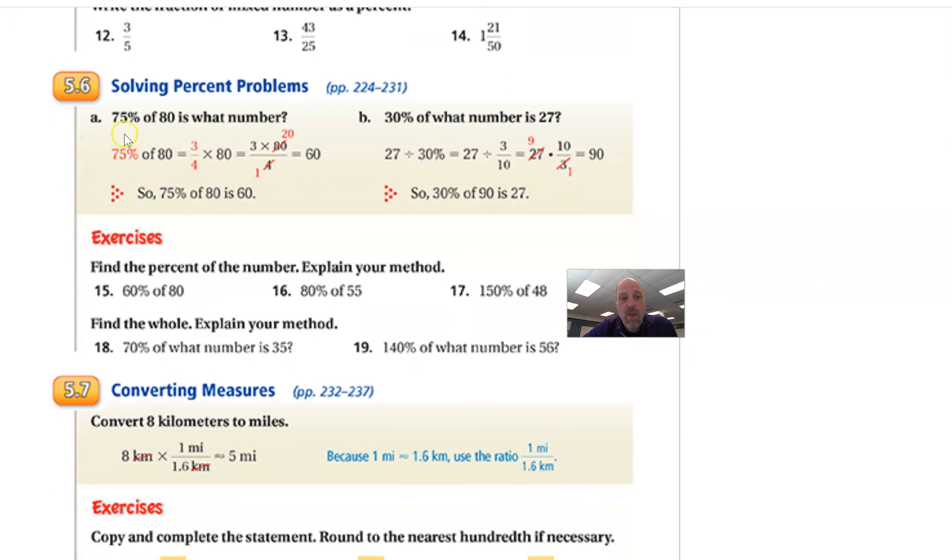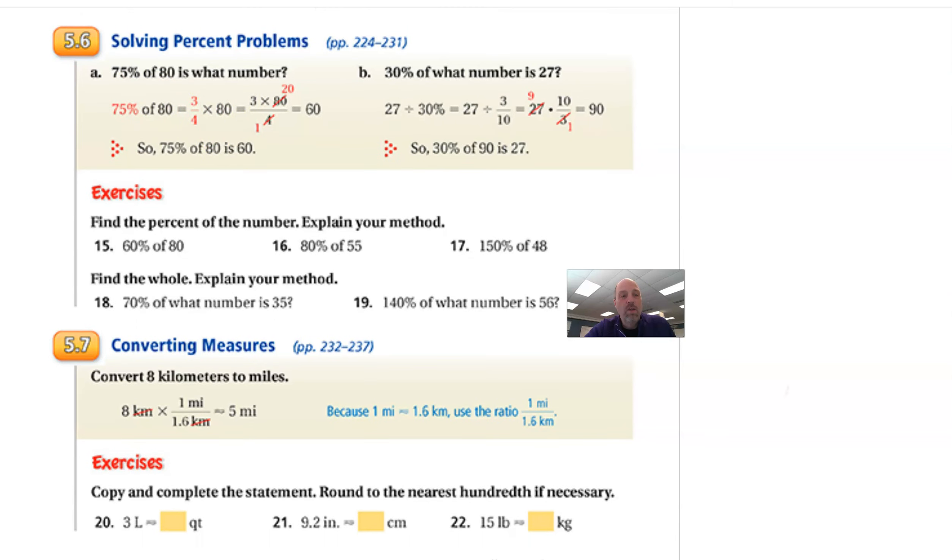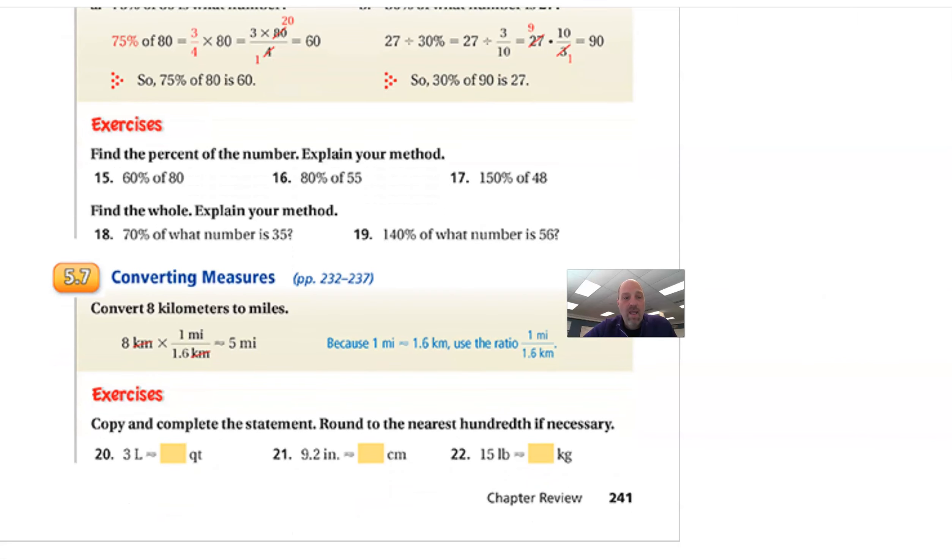Percentage problems, the same. If you understand that percents are the same as decimals and fractions, I just changed this. This is my favorite part of math right here. 75% is 75 hundredths. Of means times. 80 is 80. Is means equals, and then whatever number it is. So 0.75 times 80 equals 60. I would never do this in fractions. That's the way the book does. Decimals are much easier than fractions. You can do it either way, though. And that's really all there is.